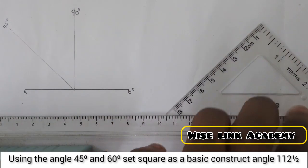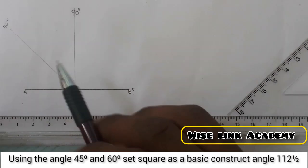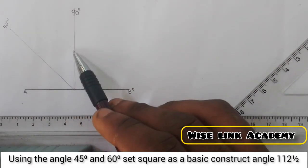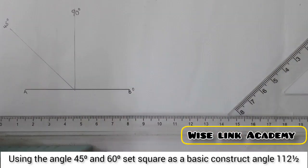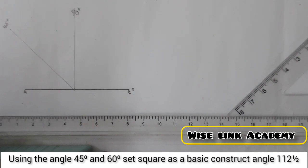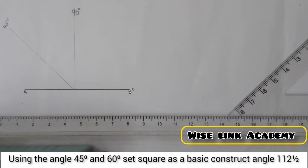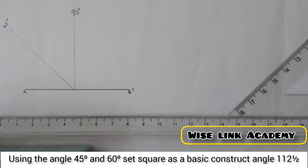So my next task now, I need to bisect 45 into 2, such that I'll be having 22.5. If I divide 45 by 2, I get 22.5.